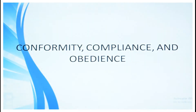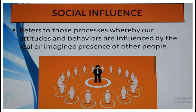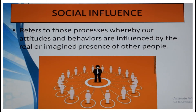Now let's move to the next topic: conformity, compliance, and obedience — which comes under social influence. Social influence refers to those processes whereby our attitudes and behaviors are influenced by the real and imagined presence of other people. For example, we get influenced by TV commercials — our favorite stars apply fairness cream and get a glowing effect, so we start using it too. This is social influence.